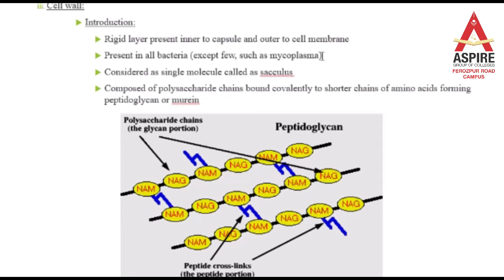The cell wall is made of a large molecule known as peptidoglycan. Peptidoglycan is considered a single large molecule. If you look at the composition, it is made up of polysaccharide chains bound covalently to shorter chains of amino acids.